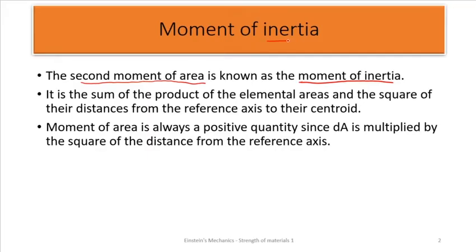So what then is moment of inertia? It is the sum of the product of the elemental areas and the square of their distances from the reference axis to the centroids. This definition gives us a clear formula for moment of inertia. With this definition we will understand it better if we try to use the parallel axis theorem to find the moment of inertia.